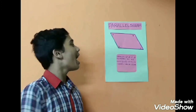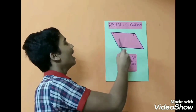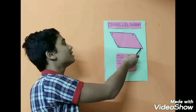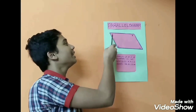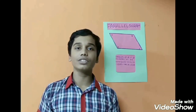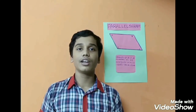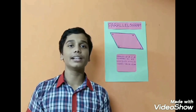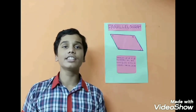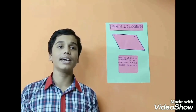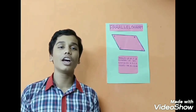Opposite angles are angle D and angle B, and angle C and angle A. They are also facing opposite to each other, so they are known as opposite angles. Now let us learn about adjacent sides and angles.